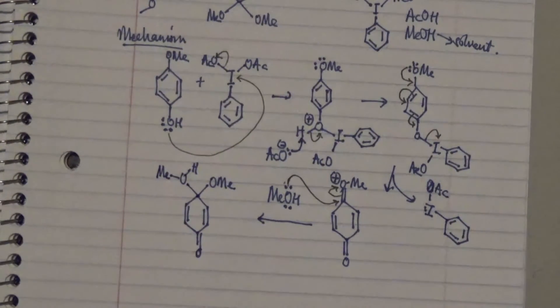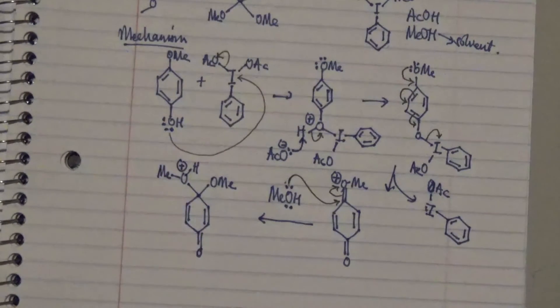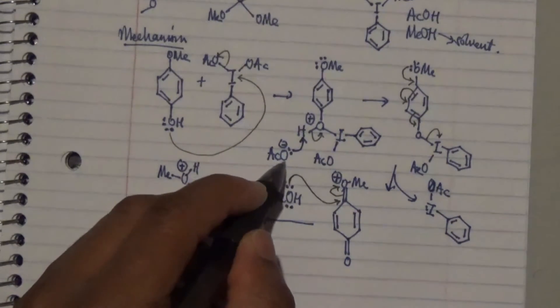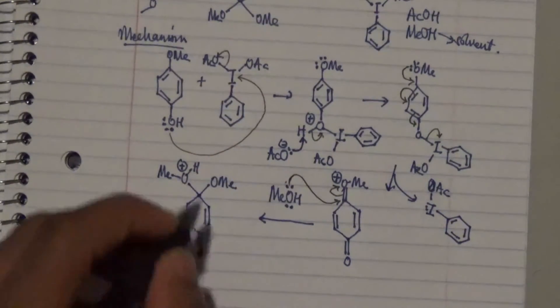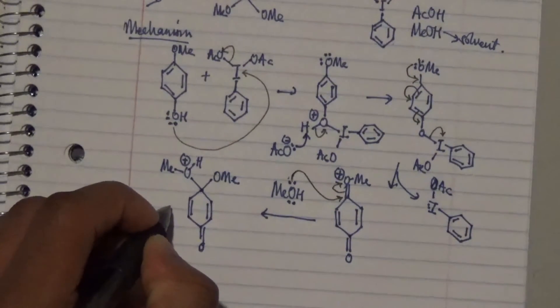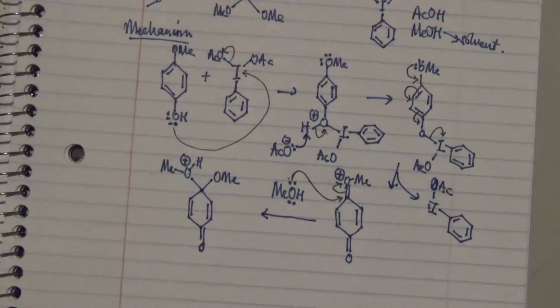Now since this oxygen has a positive charge, to make it neutral either the solvent or this particular compound extracts this particular hydrogen. But it's way better to say the solvent actually picks up the hydrogen. So the solvent in the solution then comes by.